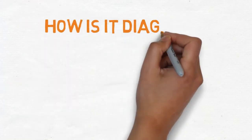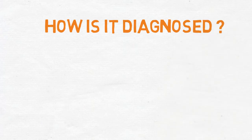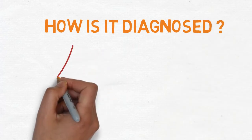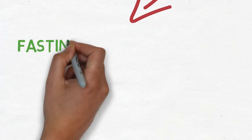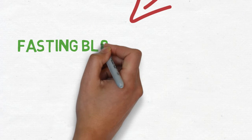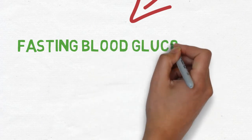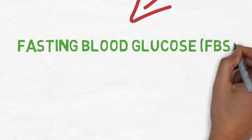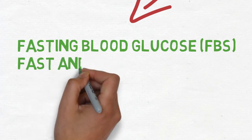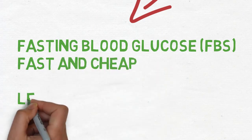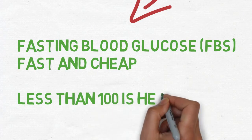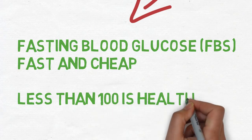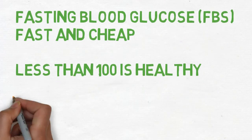Diabetes can be diagnosed by several methods, three of which are commonly used. First, the fasting blood glucose test. It's the most popular because it's readily available and very affordable. For non-diabetics, fasting blood glucose level should be less than 100 mg per deciliter.